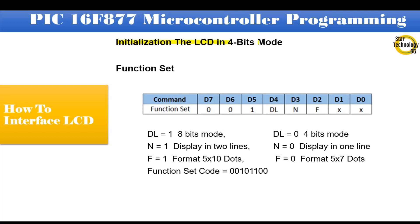Initialization of the LCD in 4-bit mode. Function set — here are the bits of function set. Bit D7 and D6 are logic 0, D5 is at logic 1, and D4 is DL. If DL equals logic 1, that is 8-bit mode, and if DL equals logic 0, that is 4-bit mode. We are using 4-bit mode, so we will select DL equals 0. And D3 is N.